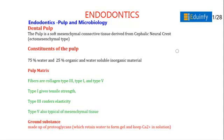Welcome to the Adjuncti Learning channel. In today's session, our topic is endodontic pulp and microbiology. Dental pulp is a soft mesenchymal connective tissue derived from the cephalic neural crest, that is ecto-mesenchymal type.